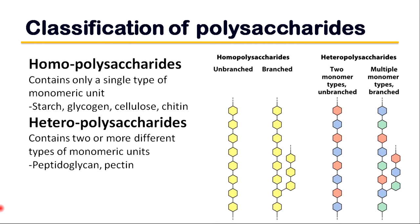Polysaccharides can be divided into two groups. The first is homopolysaccharides, which contain only a single type of monomeric unit. Examples of homopolysaccharides are starch, glycogen, cellulose, and chitin. The second group is heteropolysaccharides, which contain two or more different types of monomeric units. Peptidoglycan and pectin are some examples of heteropolysaccharides.